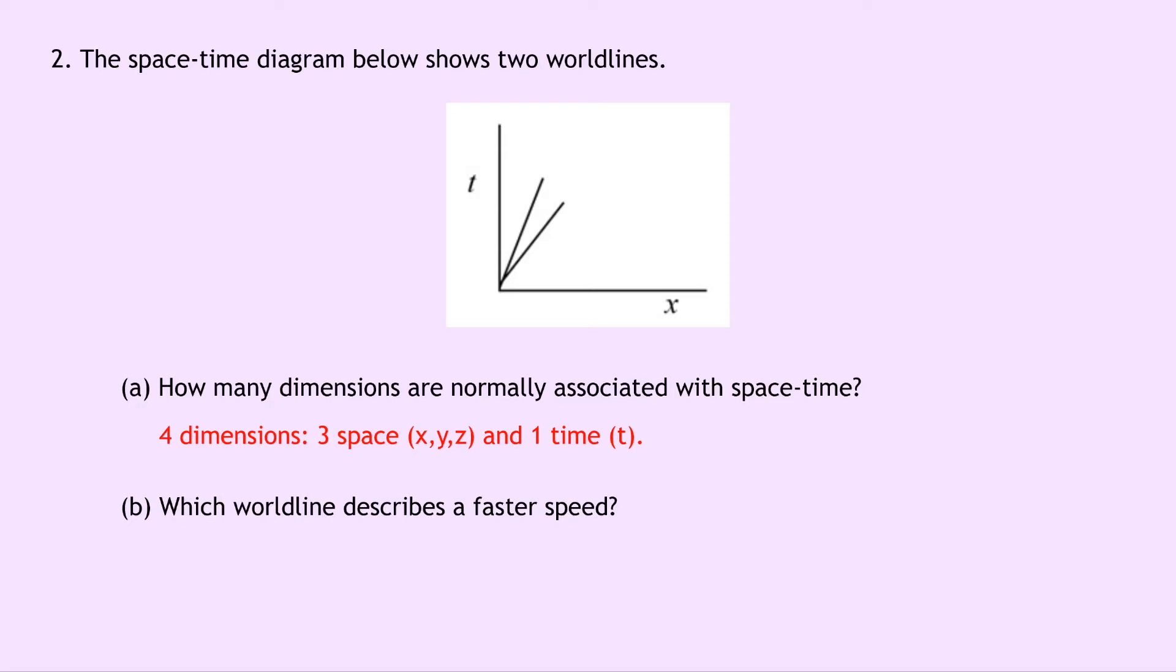Part B then says which worldline describes a faster speed. Well remember it's going to be the positively sloping line which has the steeper gradient. And steeper in this case means closer to the x-axis, the position axis over here. So the worldline with the faster speed is going to be the worldline closest to the x-axis since its gradient is steeper. So that's this one here.